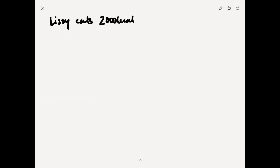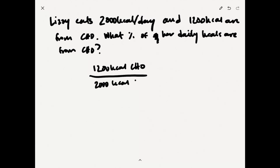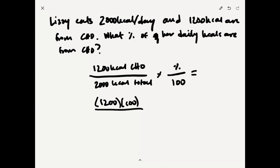Let's figure out if we're meeting our AMDRs with a sample problem: 1,200 calories are from carbohydrate out of a 2,000-calorie diet. What percent of daily calories are from carbohydrate? Set up the problem as 1,200 calories of carbohydrate over 2,000 total calories, then multiply by 100. That's 1,200 × 100 ÷ 2,000 = 120,000 ÷ 2,000, which equals 60 percent. So 60 percent of Lizzie's calories come from carbohydrate.